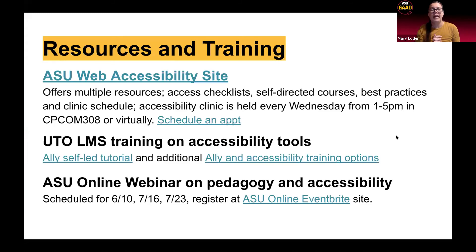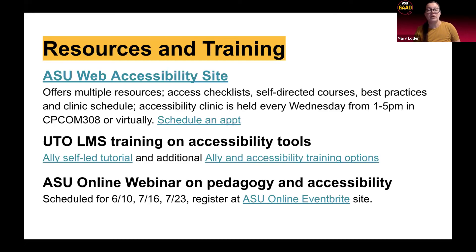So we're going to wrap this up and mention some things we've already talked about. The ASU web accessibility site is available to you — a plethora of information, so please check it out. You can also schedule an appointment. The UTO does have training for Ally — you're welcome to take their self-led tutorial or schedule Ally and accessibility training one-to-one or as a group. We also have ASU Online webinars coming up on pedagogy and Ally, and accessibility webinars hosted by Julie Allen on June 10th, July 16th, and July 23rd.